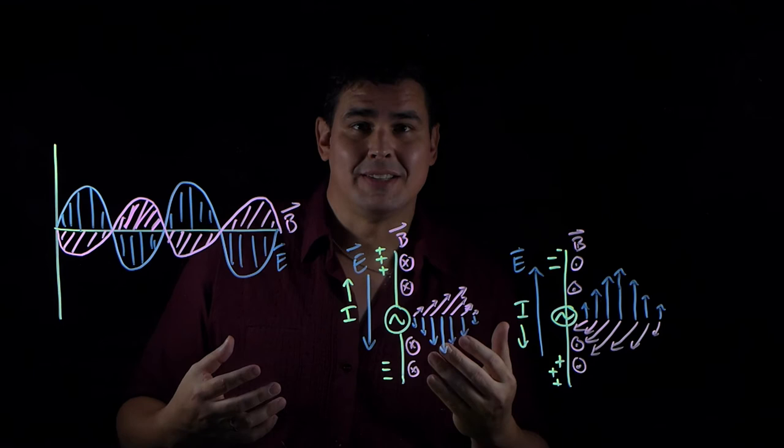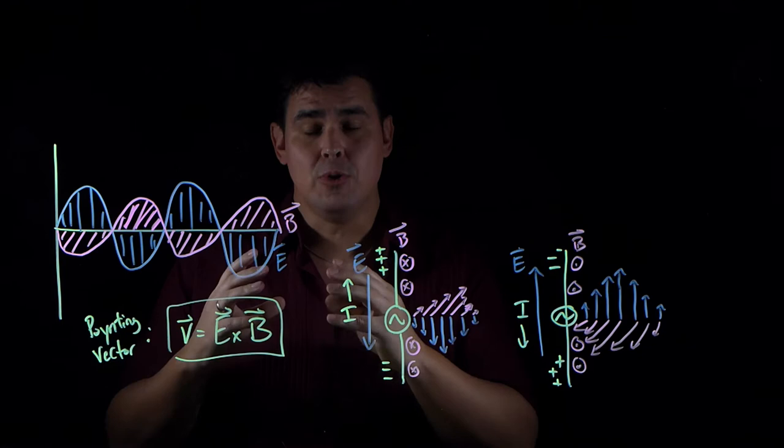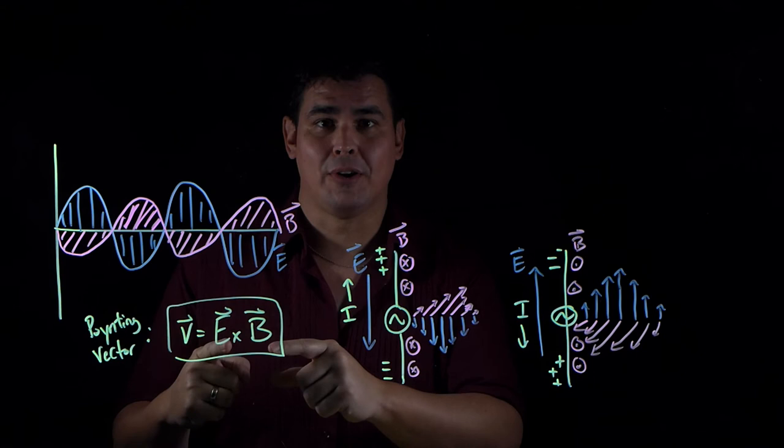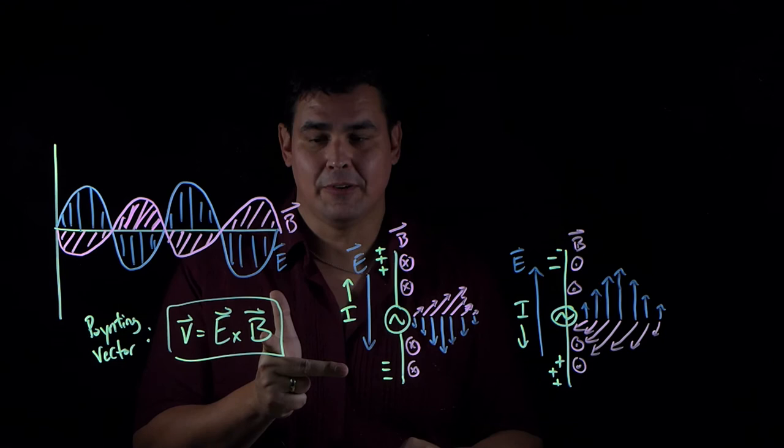The way to figure out the direction just by looking at the fields — that's a question you might see sometimes, like here's these electromagnetic fields, which way is the wave traveling — is to use something called the Poynting vector. We're not going to calculate this because it's a cross product, but you can use it to figure out the direction because the velocity of the electromagnetic wave is going to be the cross product of the electric and the magnetic fields. When you do cross products, the first vector is your thumb, your second vector is your fingers, and when you cross them, that gives you the direction.